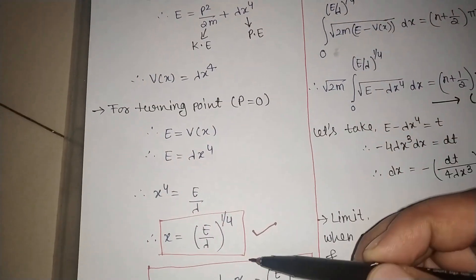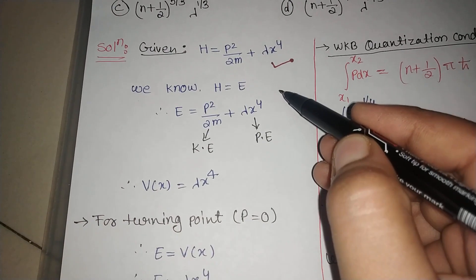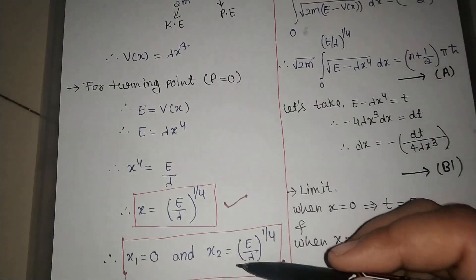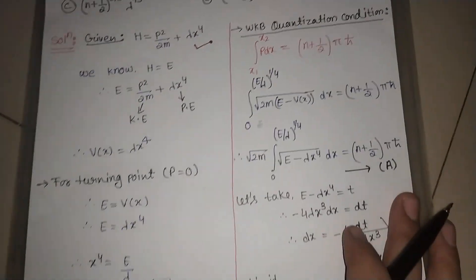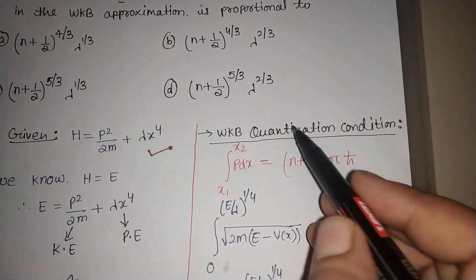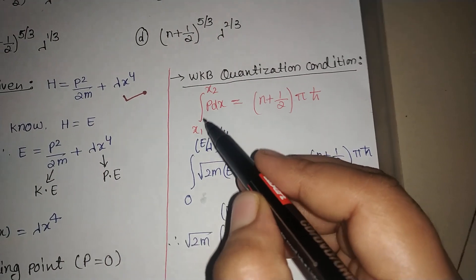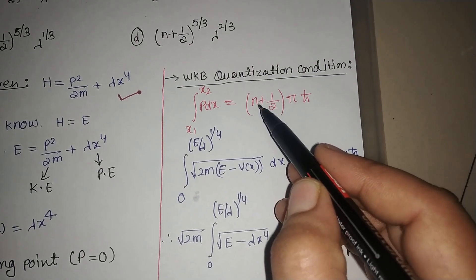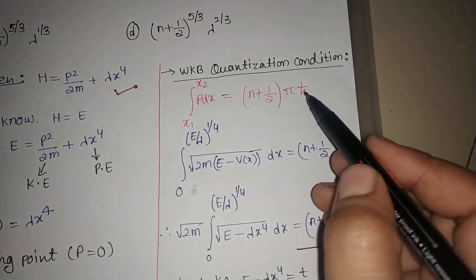After finding the turning points, the next step is to use the WKB quantization condition. The formula is the integral from x₁ to x₂ of p(x) dx = (n + 1/2)πℏ. Now we will substitute our values into this formula.